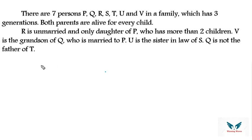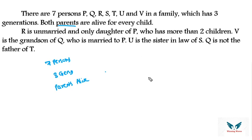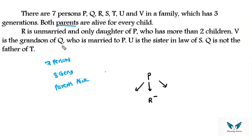Both parents being alive means every child has a father and mother present. P's only daughter is R — she is unmarried. P has more than two children, meaning three or more, one of whom is R. Q is married to P, so Q and P are the first-generation couple.